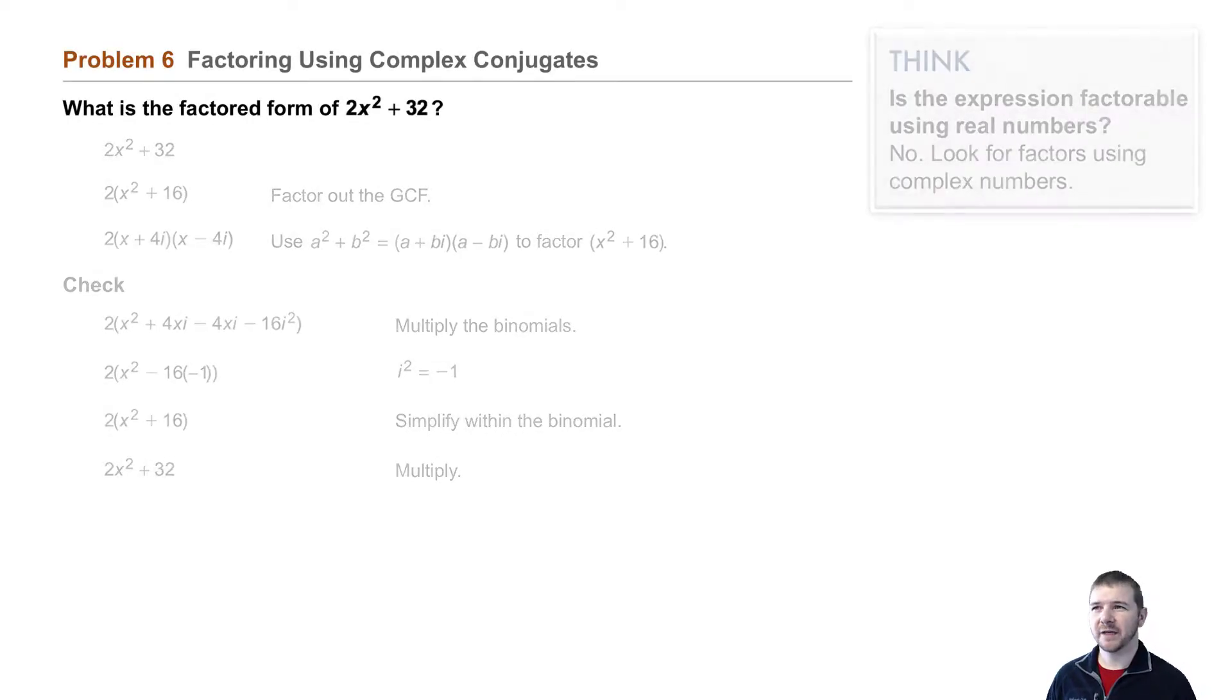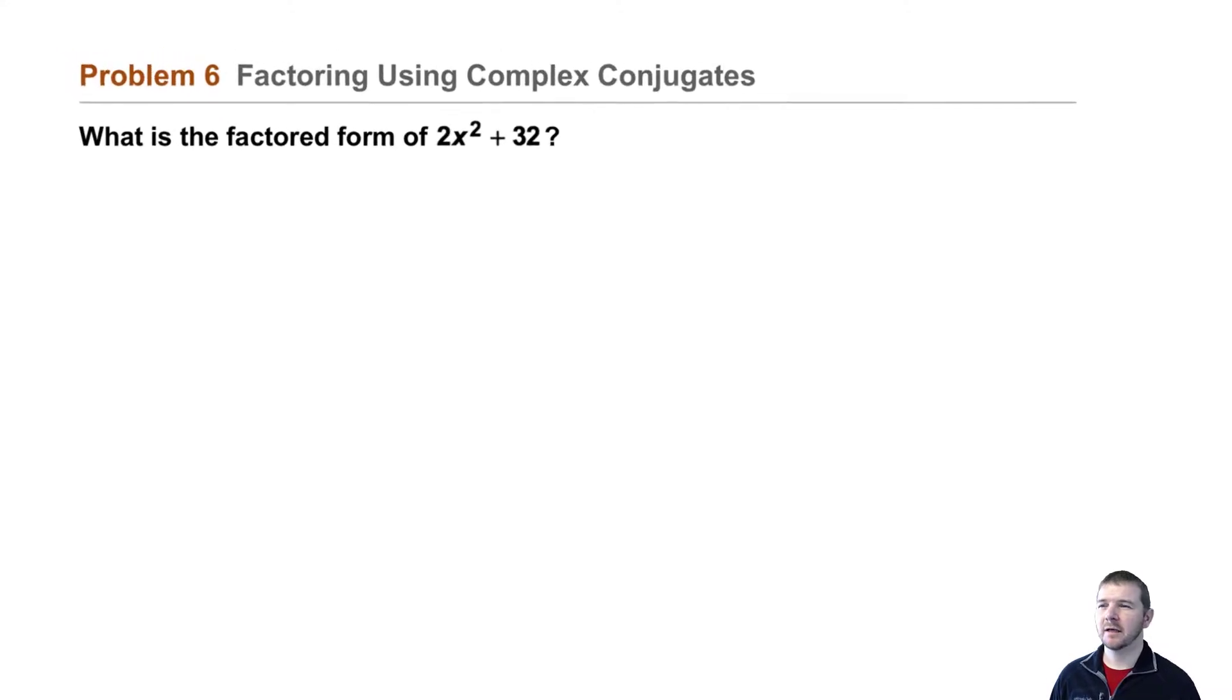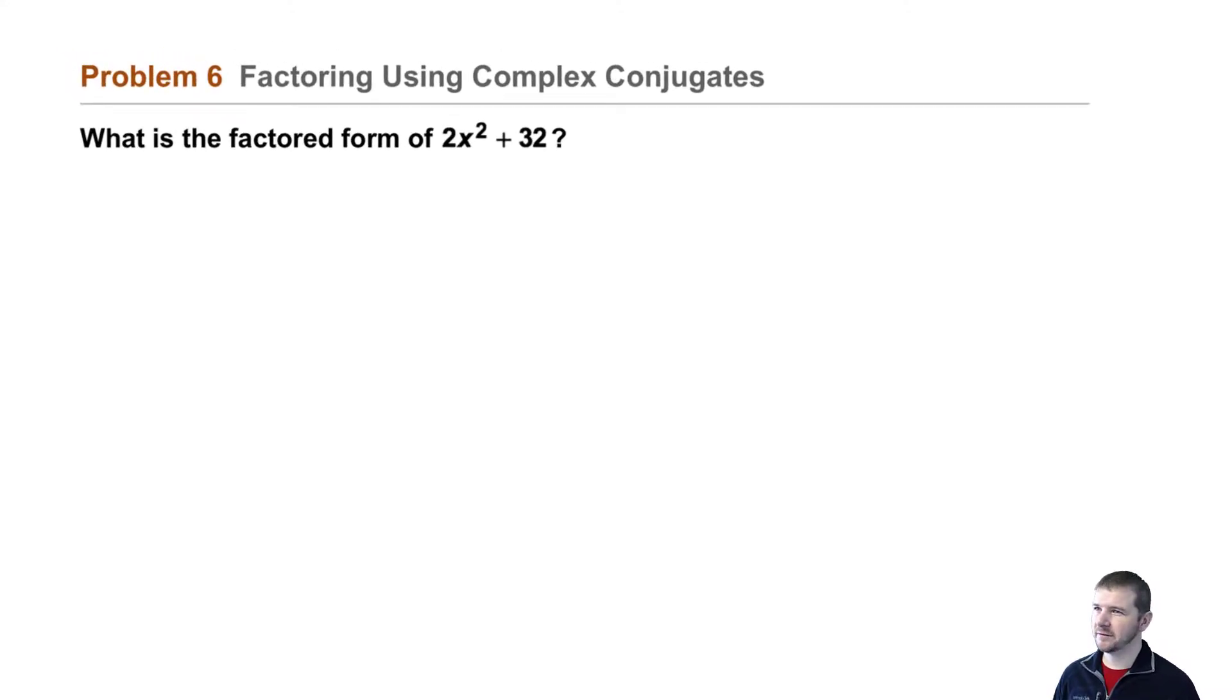Problem 6: Factoring using complex conjugates. What is the factored form of 2x² + 32? We'll start by rewriting the expression 2x² + 32, and then factor out the greatest common factor 2, so this becomes 2 times the binomial x² + 16.